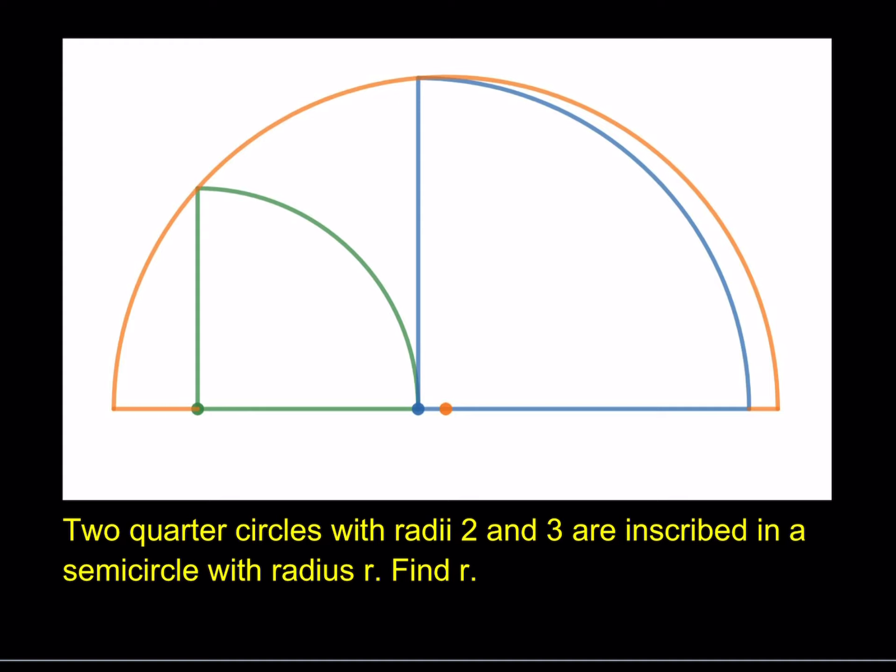Nice. So, what are we going to do? We have a semicircle. We don't know the radius of the semicircle. And two quarter circles are inscribed in it. And we do know their radii, 2 and 3. So, let's start by marking those. This is a 2, this is a 2, this is a 3, the height here.